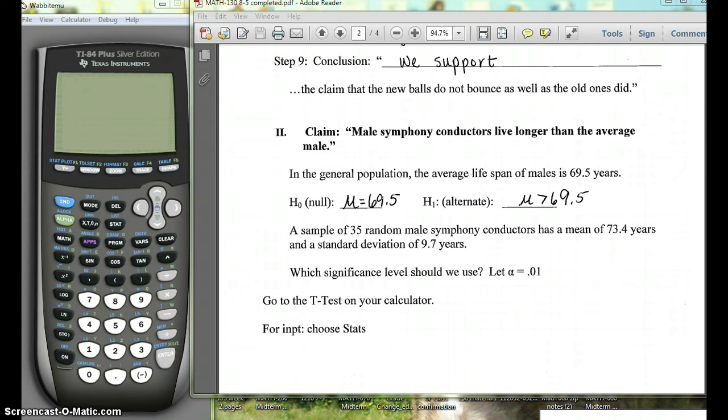So we're going to go through this problem that claims male symphony conductors live longer than the average male. Now we're told that in general the average lifespan of a male is 69.5 years, so our claim that male symphony conductors live longer than that would be the average is greater than 69.5, and that'll make our null hypothesis equal to 69.5.